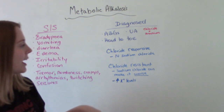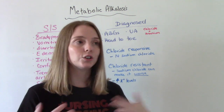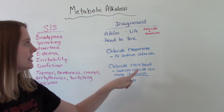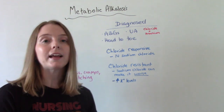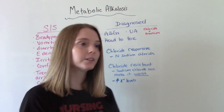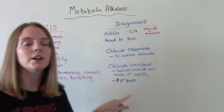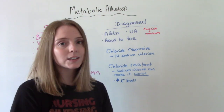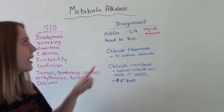If they have chloride-responsive, they need sodium chloride, so we will give that to them IV — that's a good treatment. But if they have chloride-resistant, giving sodium chloride would actually be bad and can make things worse, because the issue is they don't have enough potassium. So we give them potassium — either pills or IV — to increase their potassium levels. That's why it's so significant to check these levels to determine what kind they have.